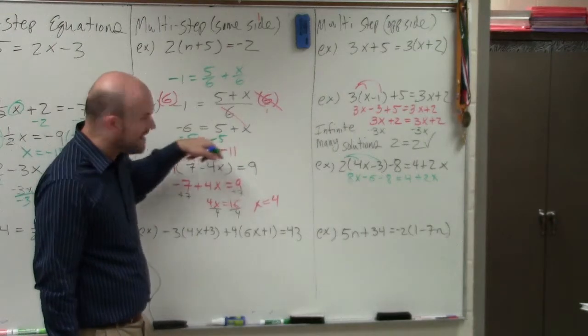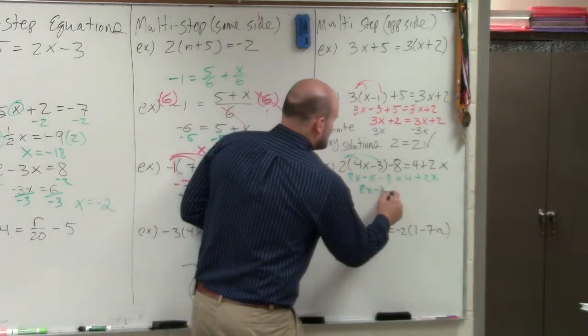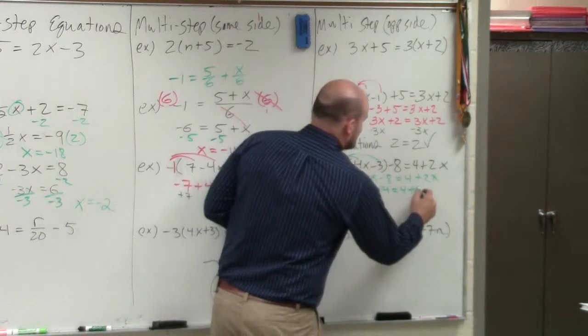So you don't have to use inverse operations. Like the minus 5 on both sides, you don't have to do that. They're on the same side. So we get 8x minus 14 equals 4 plus 2x.